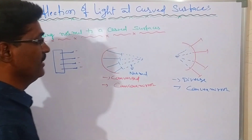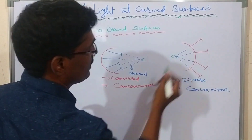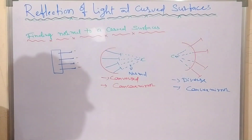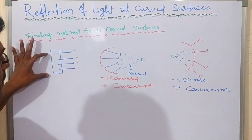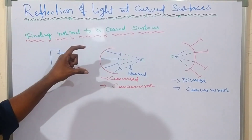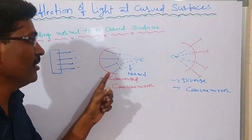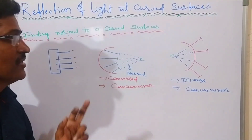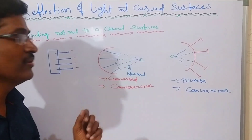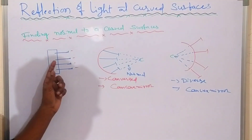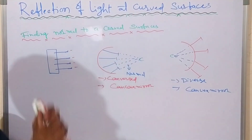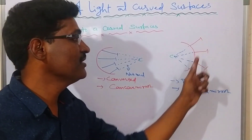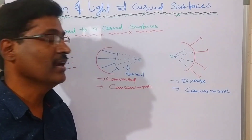The place where all the normal lines meet is called the center of curvature, represented as C. When the plane mirror is pressed inward, the pins converge and the normal lines meet at the center of curvature — that is a concave mirror. When you press outward, the pins are diverged, and where divergence takes place that is a convex mirror.